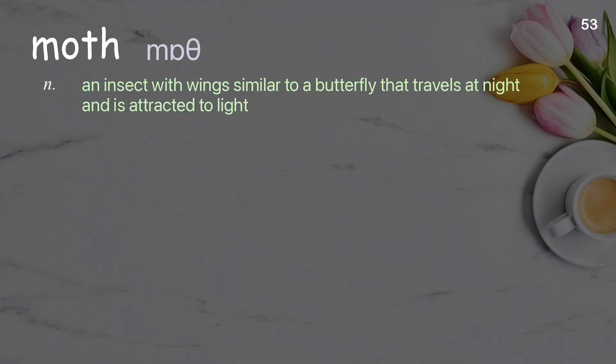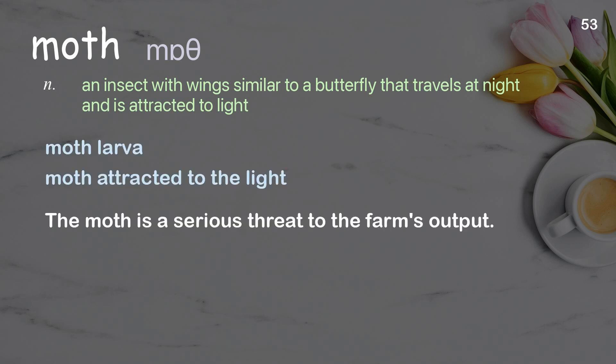Moth: an insect with wings similar to a butterfly that travels at night and is attracted to light. Examples: moth larva, moth attracted to the light. The moth is a serious threat to the farm's output.